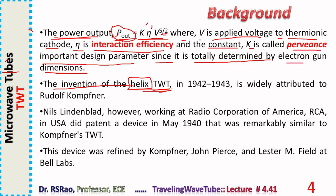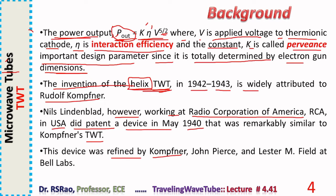The invention of the helix TWT in 1942–43 is widely attributed to Rolf Kompfner. However, Nils Lindenblad, working at RCA in the USA, did patent a remarkably similar device in May 1940. This device was later refined by Kompfner, John Pierce, and Lester Youngfield at Bell Labs.